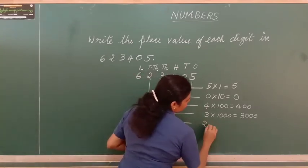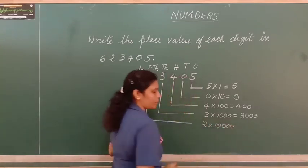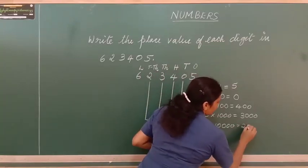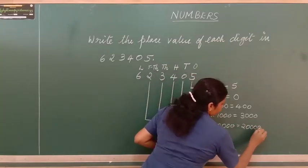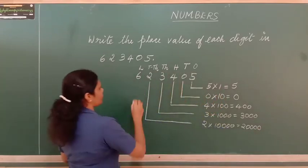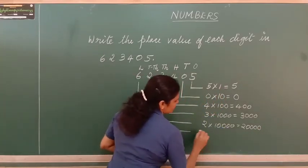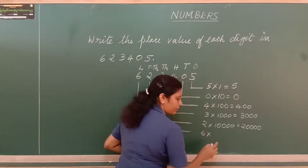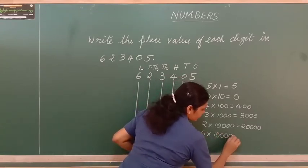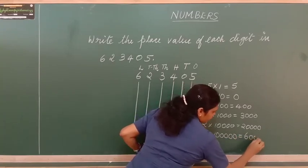2 is in ten thousands place, so 2 × 10,000 = 20,000. Finally, 6 is in lakhs place, so 6 × 1 lakh = 6 lakh.